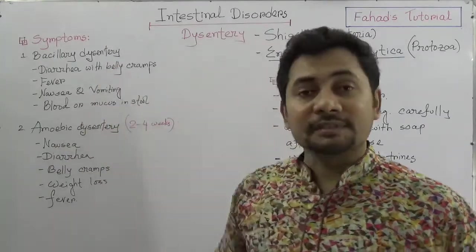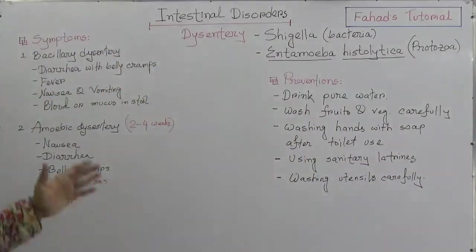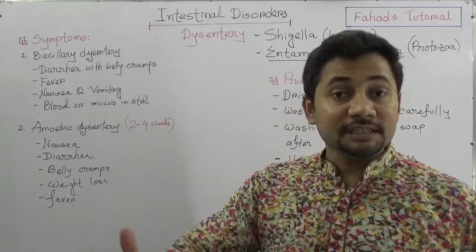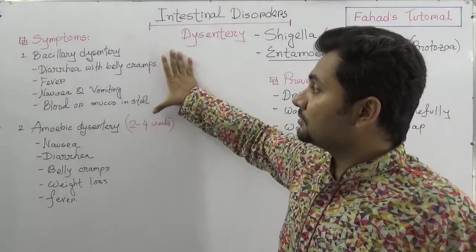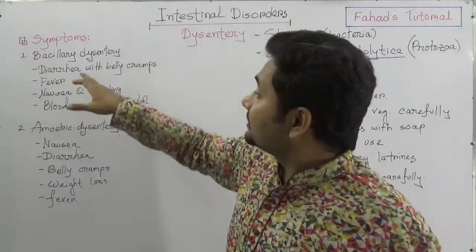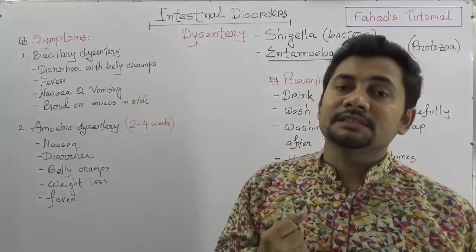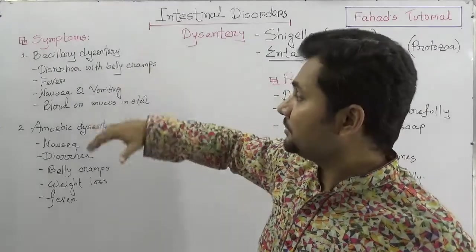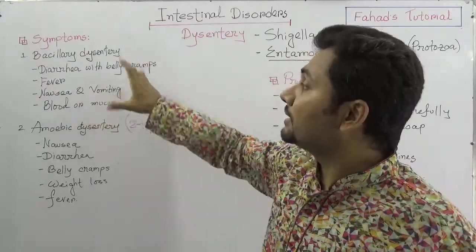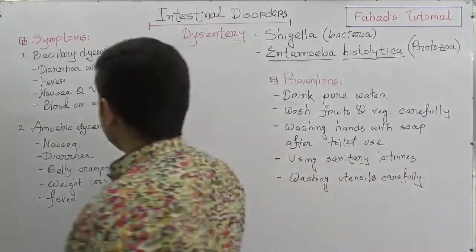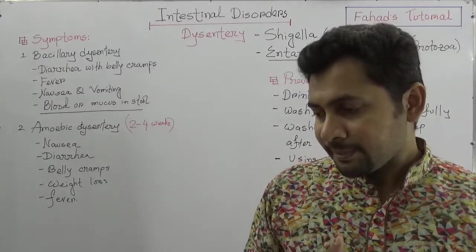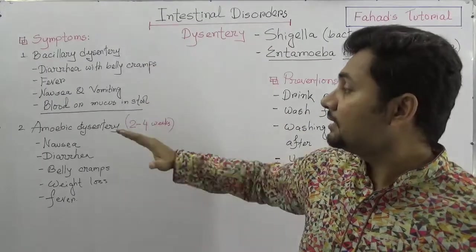What are the symptoms of Dysentery? In the case of Bacillary Dysentery, the incubation period can be one to three days, sometimes up to four days, and it varies person to person. The symptoms of Bacillary Dysentery include diarrhea with belly cramps — belly cramps are very prominent in this case — fever, nausea and vomiting, and blood or mucus in the stool, which is the most prominent symptom of Dysentery.